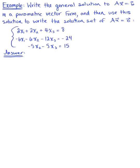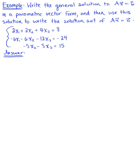Write the general solution to the non-homogeneous equation in a parametric vector form, and then use this solution to write the solution set of the corresponding homogeneous equation. Looking at our given system, we can appreciate that this is a non-homogeneous equation if we rewrite it in its matrix equation form.